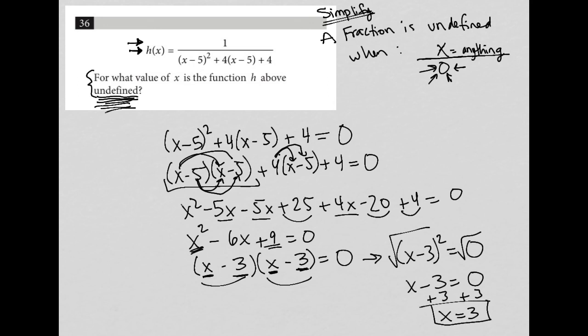So x equals three is the solution here. It is the x value that if I plug it in to my denominator, it will make the denominator undefined. If you have time at the end of the test and you're doing this, you want to just check and make sure. By all means, throw this three in to the x's here. We can even do it really quickly.